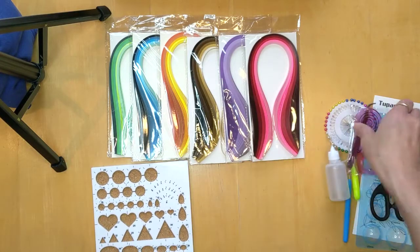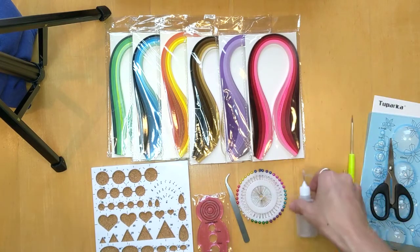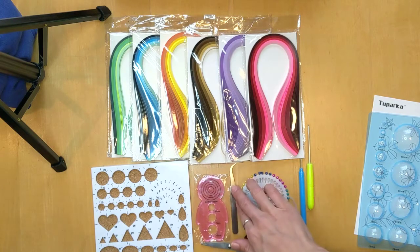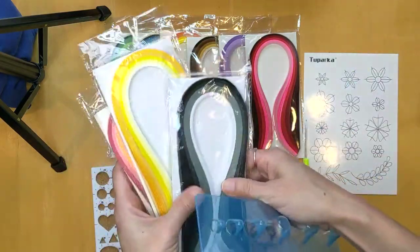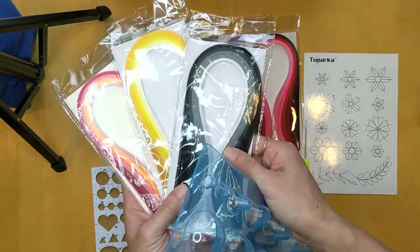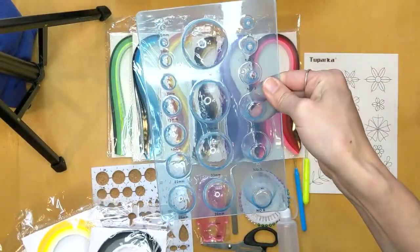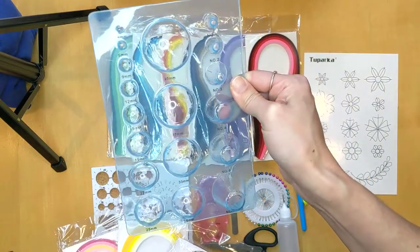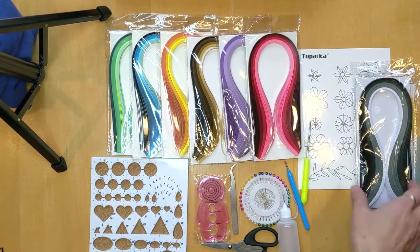So the 15 piece kit comes with all of these and the scissors. The difference between the 19 piece and the 15 piece is that you get more paper, more variety of colors, and you get this mold. So it did come with everything that it said it would.